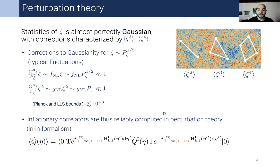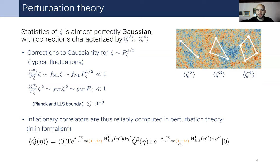One can use, for instance, the so-called in-in formalism and compute expectation values of some operator Q. The Hamiltonian can be expanded in terms of the couplings of the theory in a perturbative fashion. An important point is that we have to project onto the vacuum, and to do so we need to slightly deform the contour of integration in conformal time and add an imaginary part. This will be relevant later on.